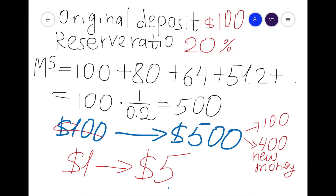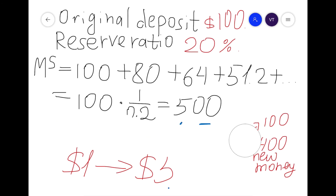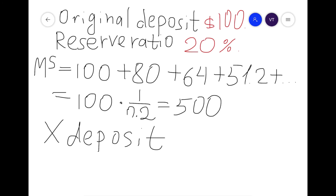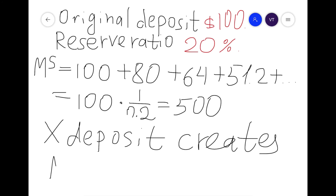To generalize: an original deposit of X creates a money supply equal to X × (1/V), where X is the original deposit and V is the reserve ratio.